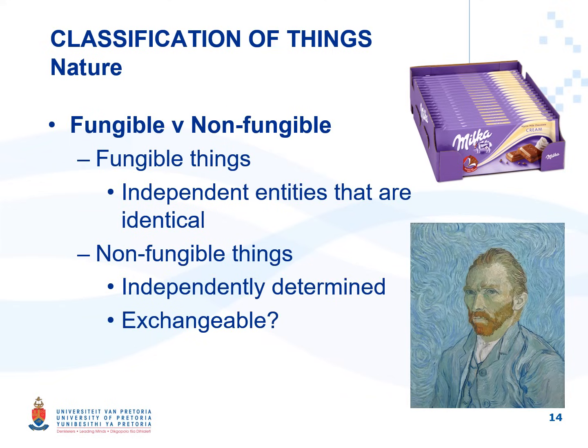Non-fungible things refer to things that are independently determined — they are unique, have unique characteristics and value, and cannot be replaced with something similar. It is usually not possible to exchange non-fungible things since they are unique, and such exchange is usually prohibited by law. A painting by a famous painter such as Van Gogh would not be exchangeable for a similar one that someone recreated. In the case of Commissioners of Customs and Excise versus Bank of Lisbon, the court decided that money is fungible since it is replaceable with other money.